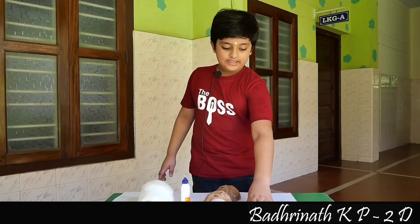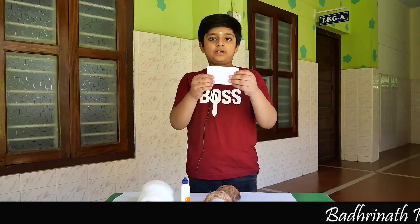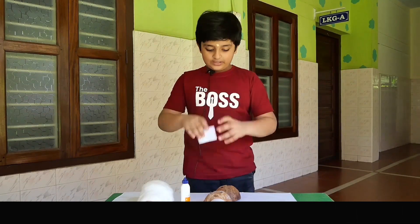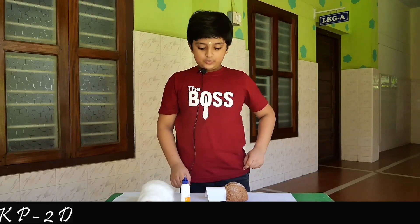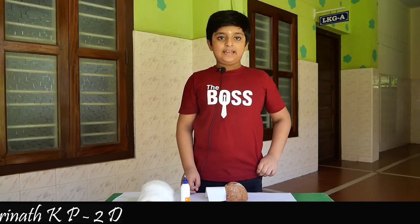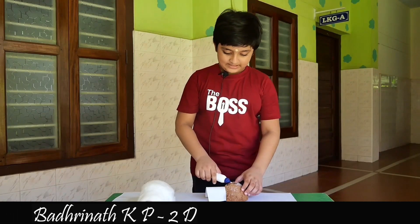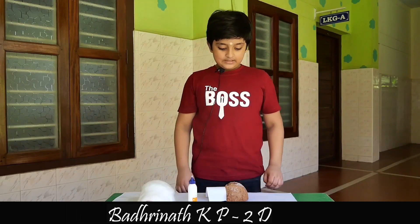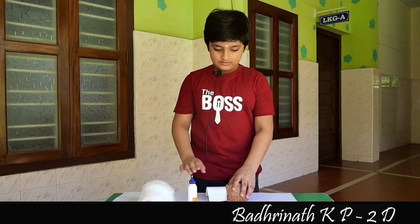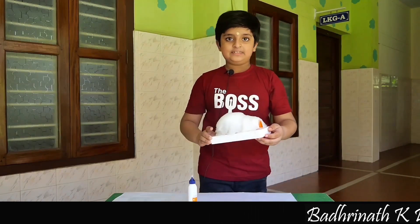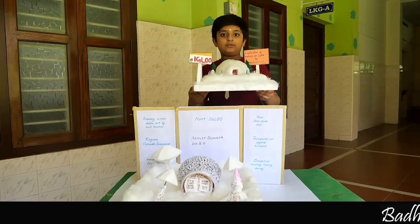My name is Badrinath. Today I am going to make honey glue. First of all, we have to take half of a coconut shell. After that, we have to take a small piece of paper. Fold it like this, stick the folded paper into the shell to make an entrance, apply glue over the paper and shell, then place cotton wool all over the paper and shell. Now our igloo is ready.